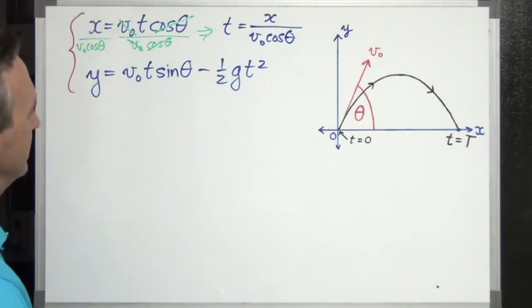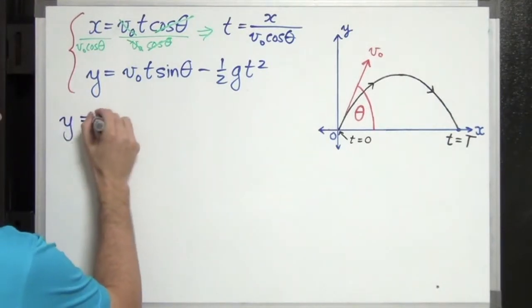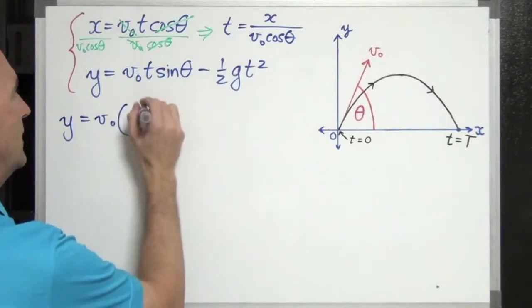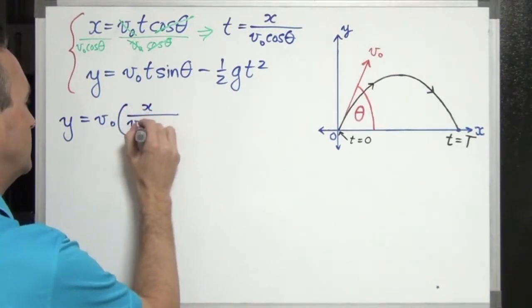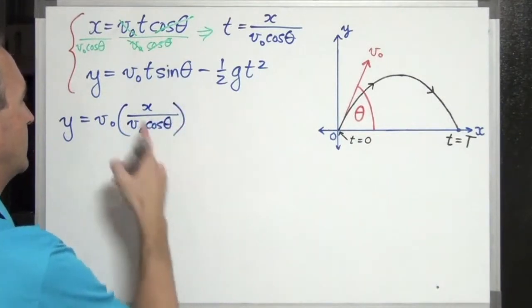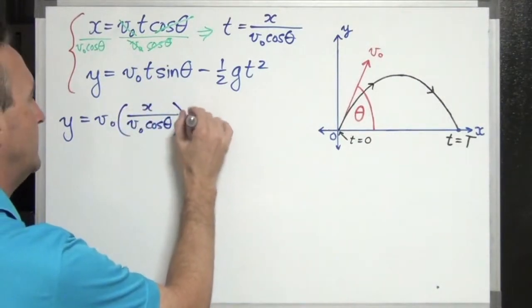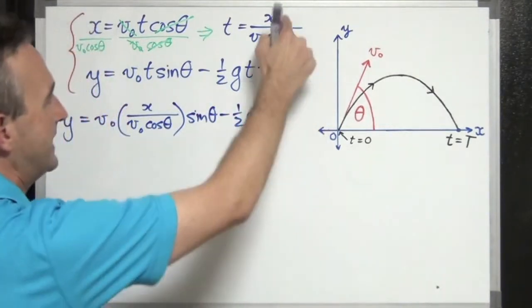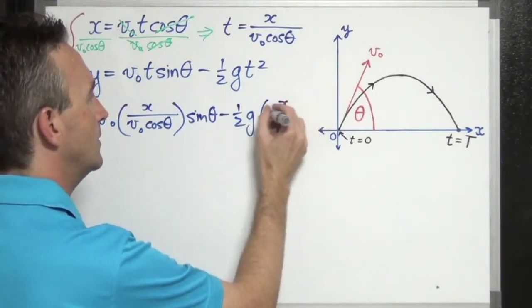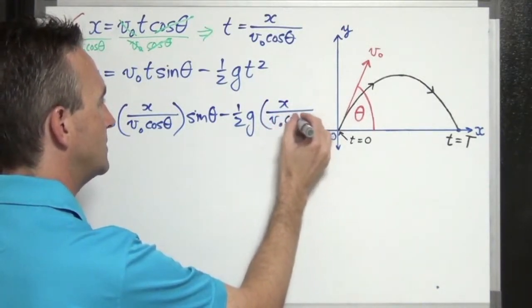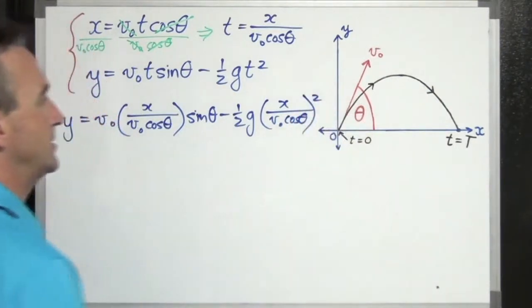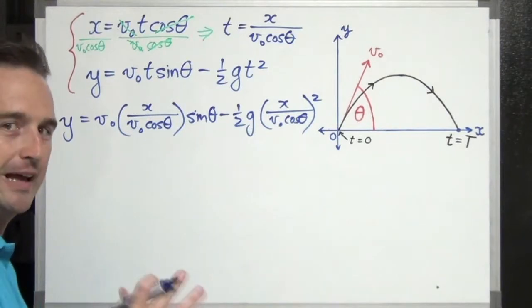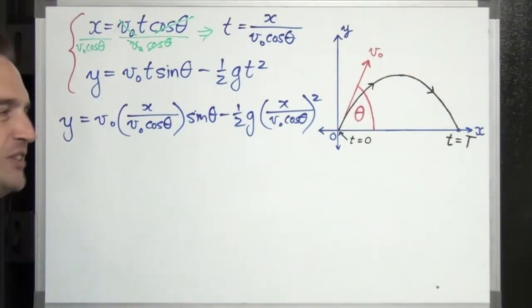This gets pretty hairy but let's get into it. So y equals v naught times t, the first time, and we get x over v naught cos theta, and that's our t, then times sine theta, then minus a half g, and t again, and this time it's going to get squared: x over v naught cos theta, and squared this time. With me so far? Not lost? Good. Hang in there, you're doing well. So this is actually it but we're just going to make it nicer. Try and simplify it into something a bit more usable and workable.